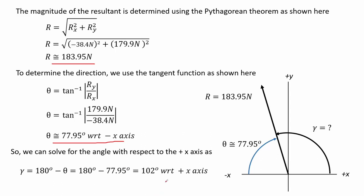To determine the orientation with respect to the positive x axis, we simply deduct theta from 180 degrees and we get 102 degrees, measured from the positive x axis.